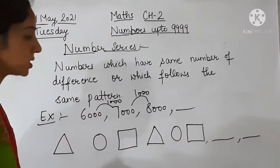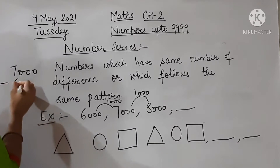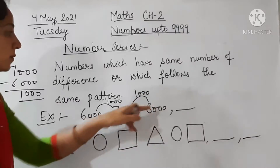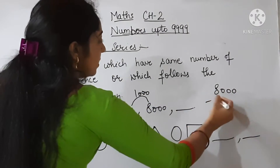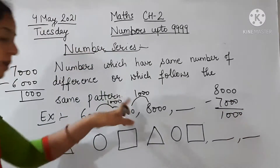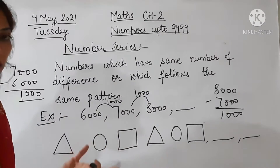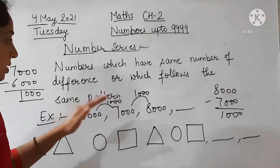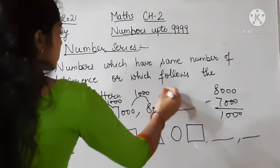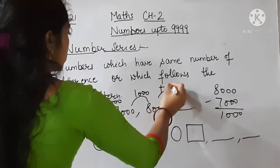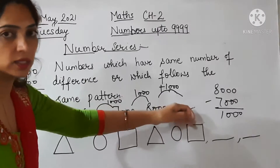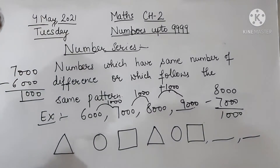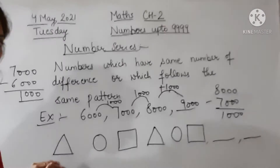Jab six thousand se seven thousand pe hum jump kiya to difference kitna aaya? Seven thousand minus six thousand — one thousand ka difference. Next, jab seven thousand se eight thousand pe move kiya, wo bhi one thousand ka difference. So the number of difference is the same — one thousand. That means the next number will also come with a difference of one thousand. Eight thousand plus one thousand equals nine thousand.